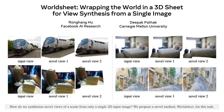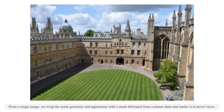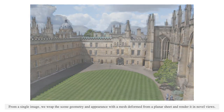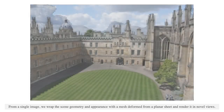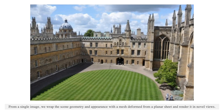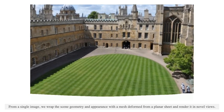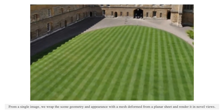How do we synthesize novel views of a scene from only a single 2D input image? We propose a novel method, WorldSheet, for this task. From a single image, we represent the scene geometry and appearance with a mesh deformed from a planar sheet and render it in novel views.